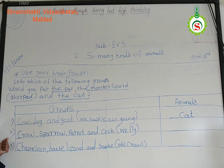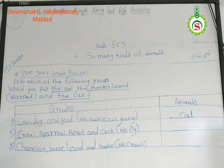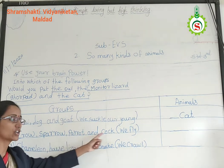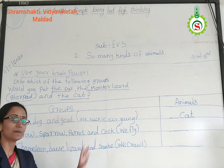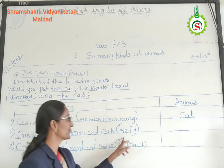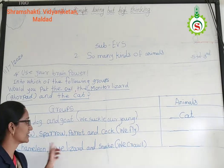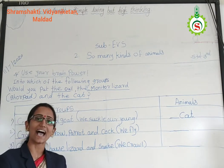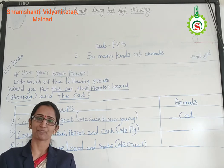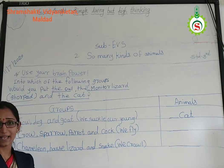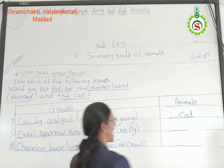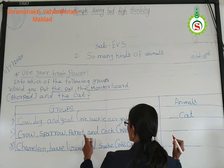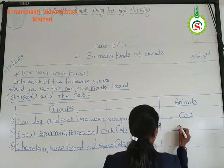Students, look at our second group. Here are: crow, sparrow, parrot, and cock. These all are birds. In the bracket: they fly. These all birds fly in the sky. Which bird also flies in the sky? Correct — owl! Owl also flies in the sky. So write here: owl.